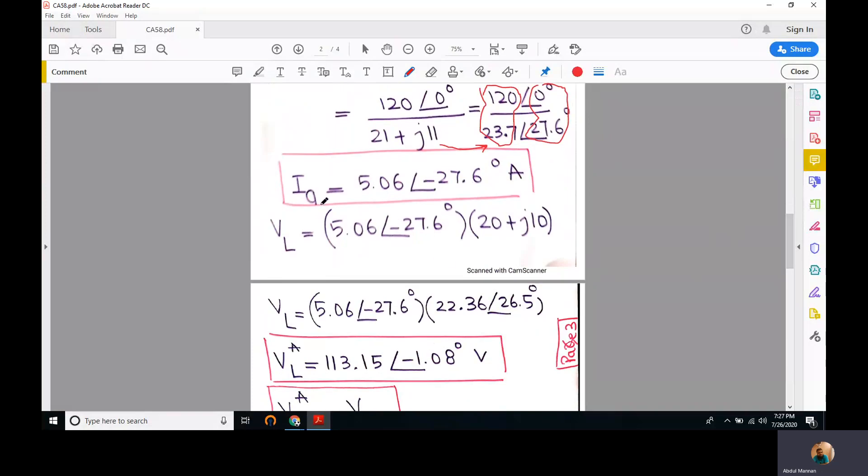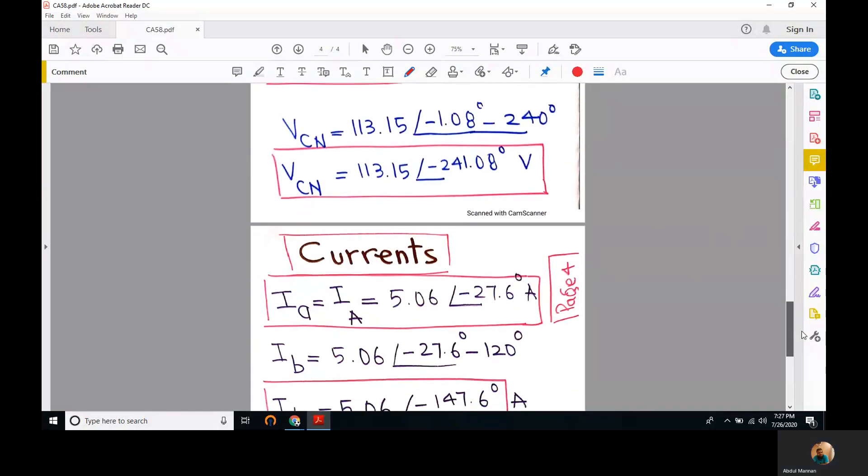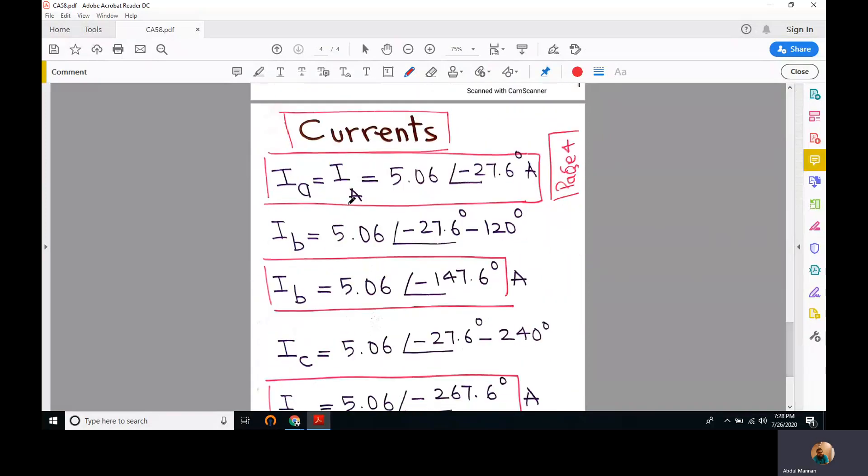Once we have computed Ia, Ib and Ic are straightforward. Ib would have the same magnitude but delayed by 120 degrees. Ic would have the same magnitude but delayed by 240 degrees. Ia is this, so Ib is delayed by 120 and Ic is delayed by 240.